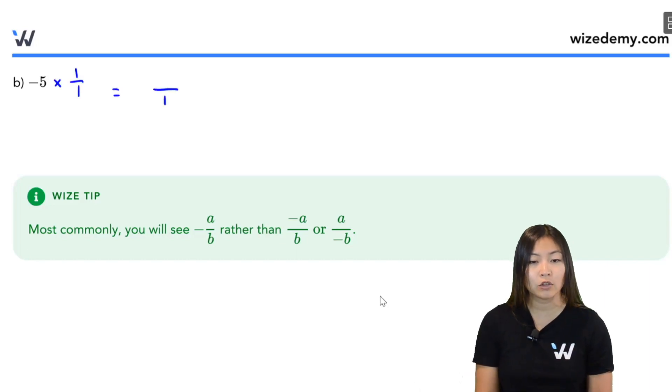So if I do that, I get a fraction over 1, and my numerator is just negative 5. So this is the rational number, which is a fraction with integers.